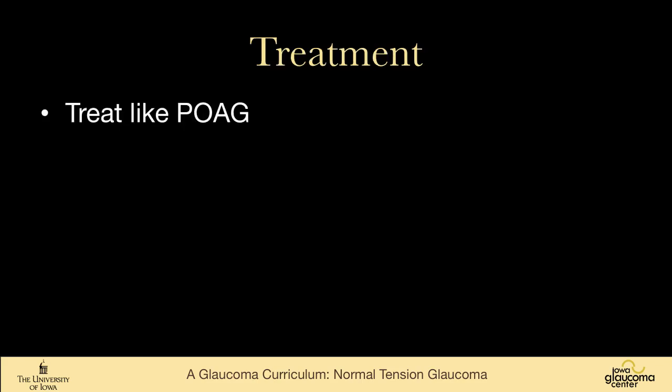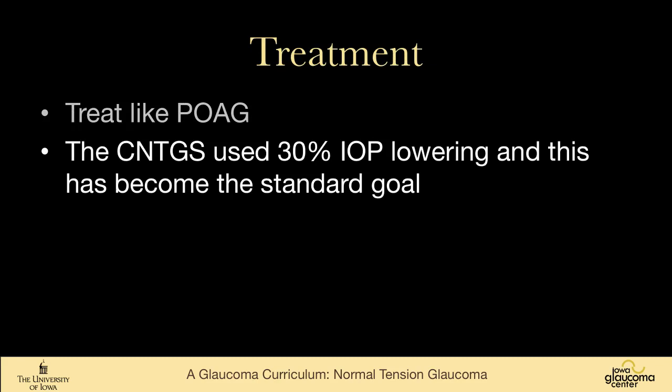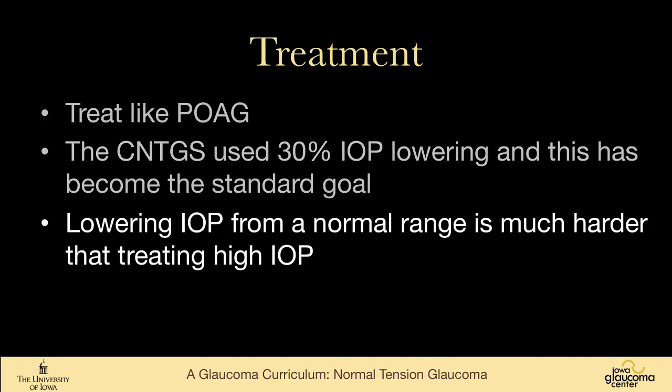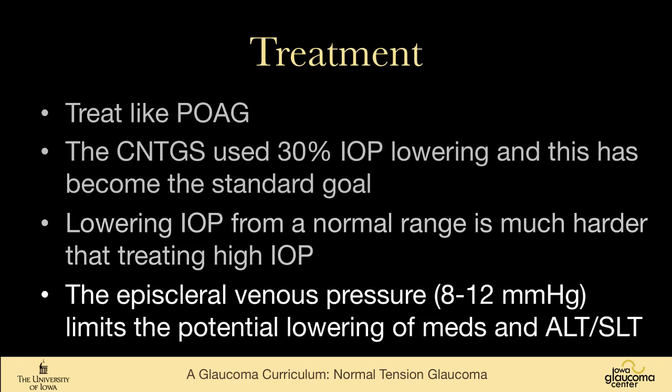We treat it like primary open angle glaucoma. The collaborative normal tension glaucoma study used a 30% pressure reduction, and because that was effective, that has become the standard we all try to achieve. Remember that lowering pressure from the normal range is much harder than treating a high pressure. I always use the analogy with patients that it's like trying to have someone who's already slender lose 20 pounds — the body just doesn't like to go certain places. The episcleral venous pressure is somewhere around 8 to 12 millimeters of mercury, and that's the potential lower limit of medications and trabeculoplasty.